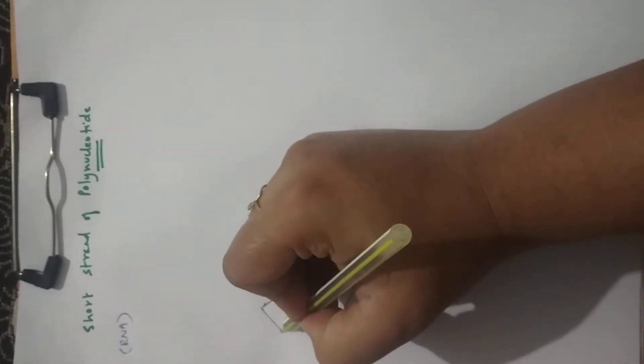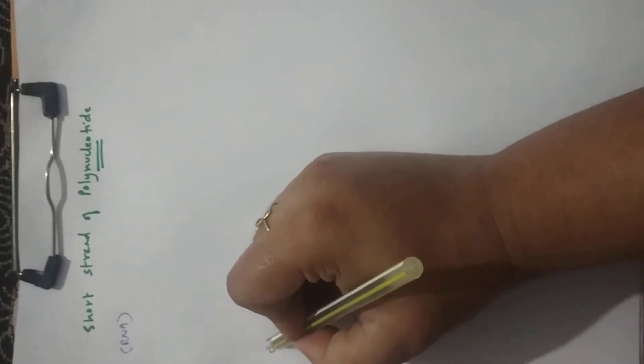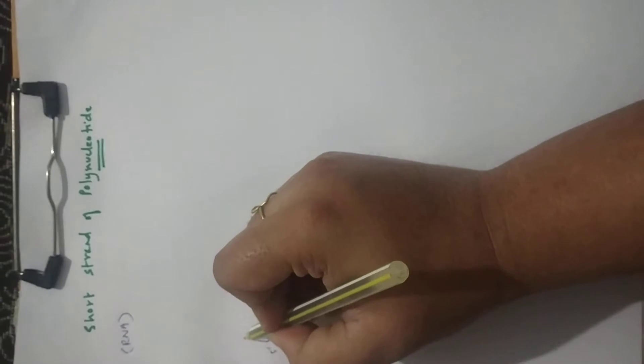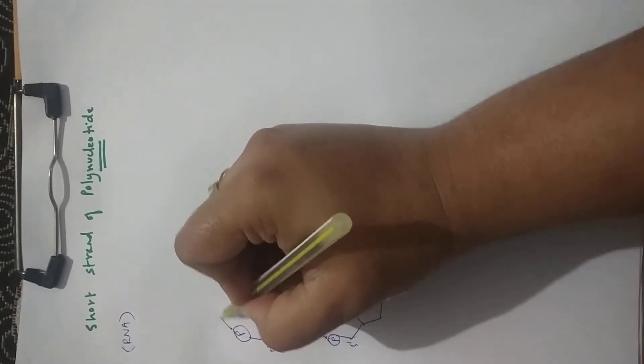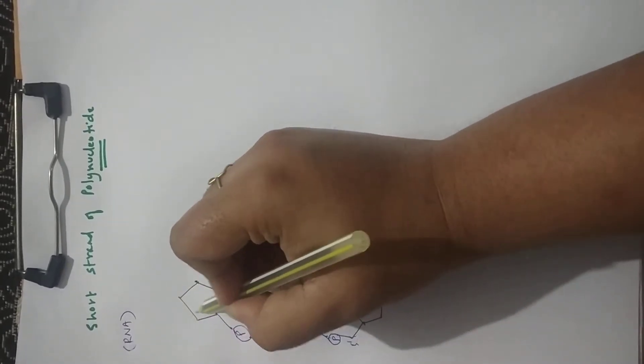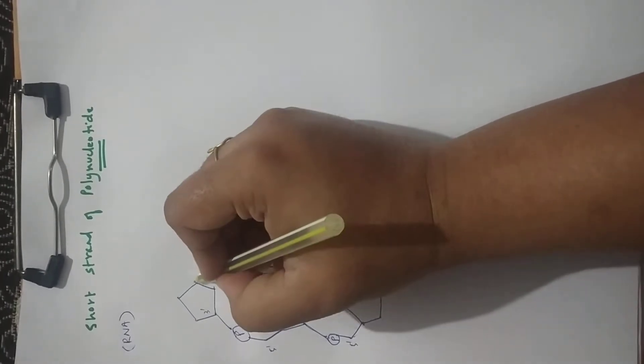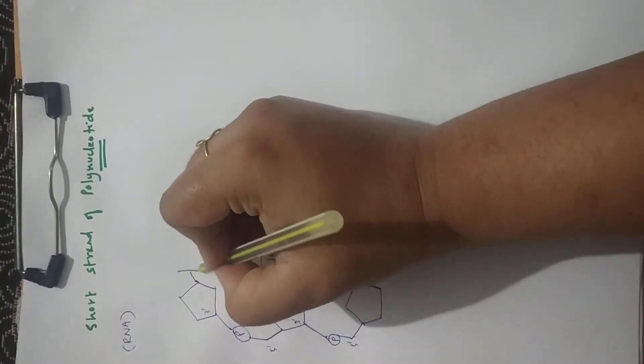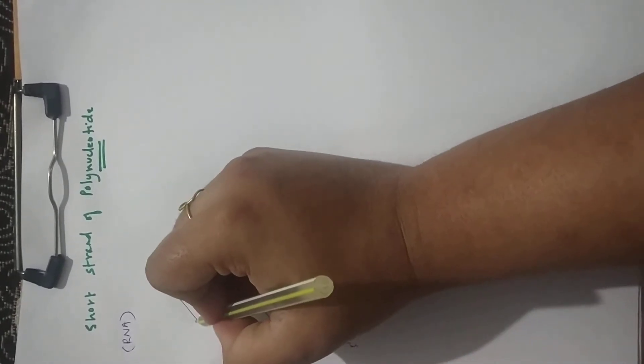Again this is the 4th carbon. Attached to it is the 5th, 5', and to the 5' is attached the phosphate. This is again bonded to the 3' of the next nucleotide, which is again attached to another nitrogenous base. And so on.